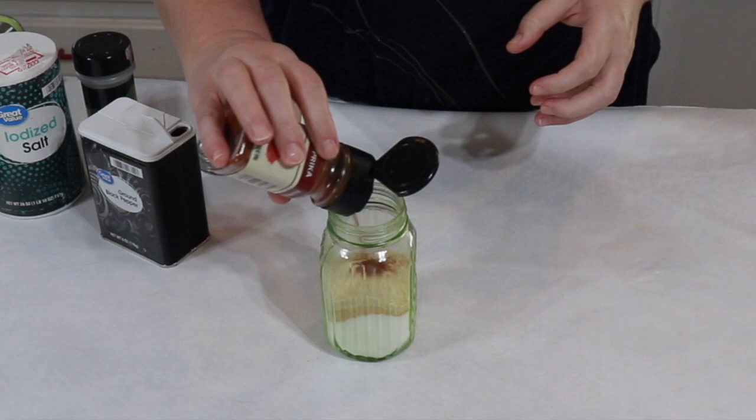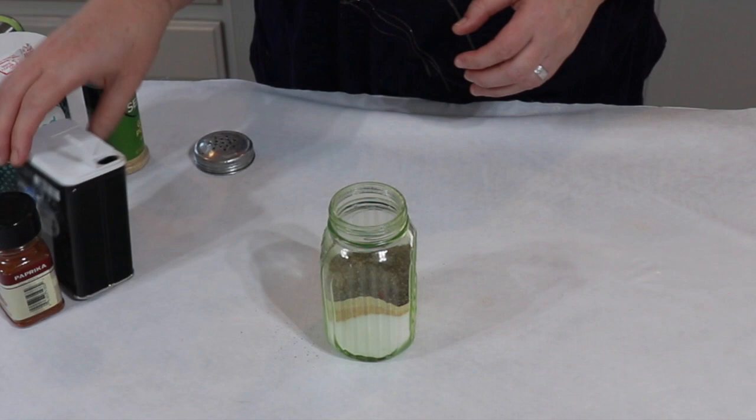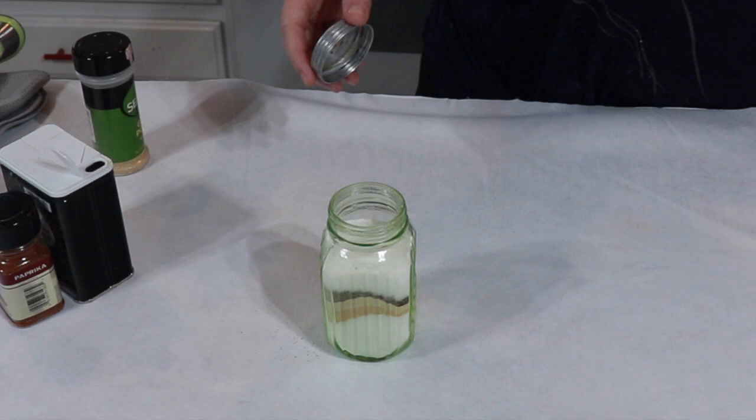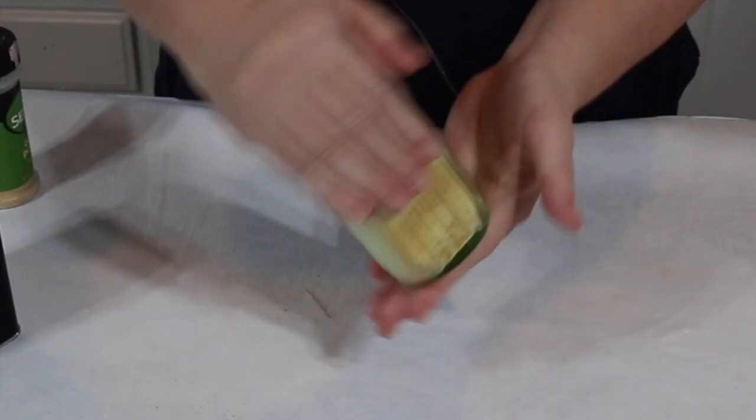Then we don't really like paprika a lot so I just do a light sprinkle of paprika and then a light sprinkle of pepper and then I fill the rest with salt.